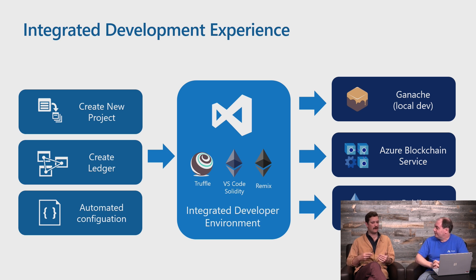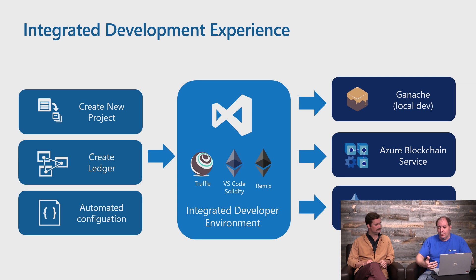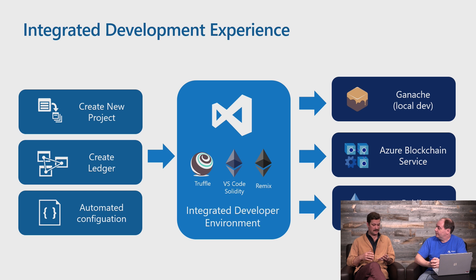You can deploy a smart contract to a ledger network that's already been created in the Azure portal, but you can also create and deploy the ledger natively in Visual Studio Code. We're even talking about things like Ganache, which is a local blockchain development environment that people typically use when they start developing on blockchain. They don't immediately want to push it up to some bigger infrastructure — they want to try it locally, and then migrate that into something like Azure Blockchain Service or even public net.